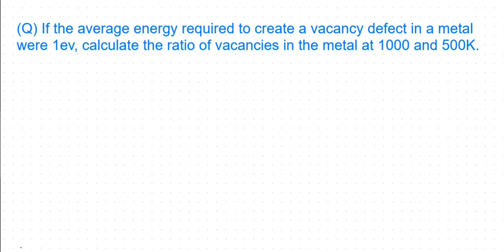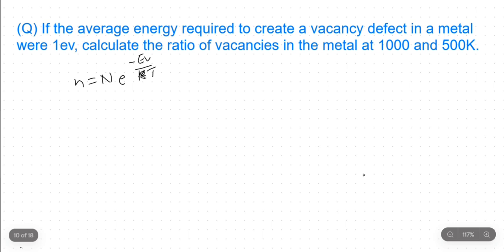In my previous video, I already showed you the derivation related to the vacancy defect in a crystal. The formula to calculate the vacancy defect in a crystal is n equals capital N times e to the power minus E_V over kT. This was the formula.